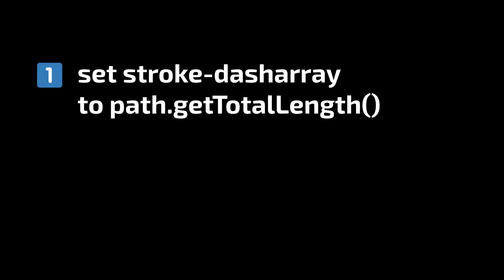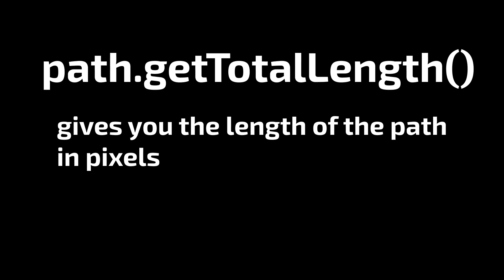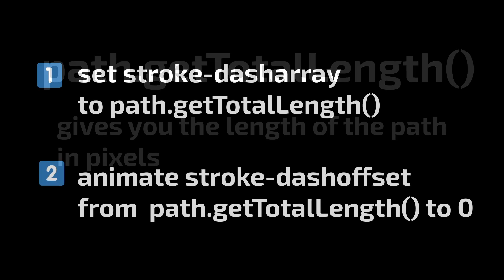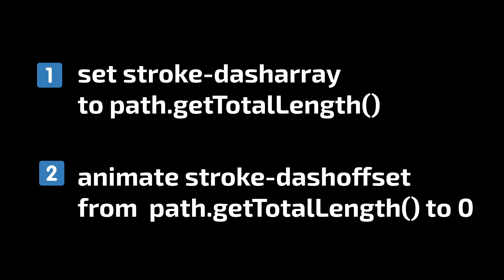First we need to set the stroke-dasharray to match the length of the checkmark, which we can get by calling getTotalLength on it. Next we set the stroke-dashoffset to match the length of the checkmark, again using getTotalLength. And lastly we want to gradually decrease the value of stroke-dashoffset all the way to zero — and we're going to use React Spring in order to do that.